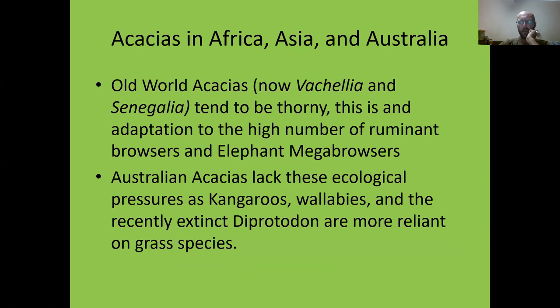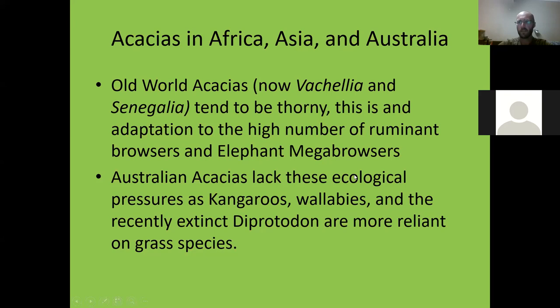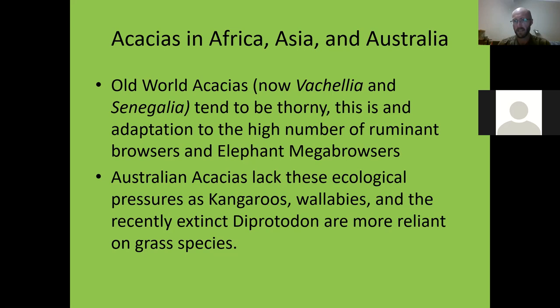An interesting ecological story: we all know what an acacia is — now called Vachellia and Senegalia. In Africa and Asia they tend to be thorny, an adaptation to the high number of ruminant browsers and mega-browsers like elephants. Australia doesn't have a high number of browsers, so there's been no ecological pressure on acacias there to grow thorns. In fact, thorns are a hindrance — you're wasting photosynthesis and growth energy on defense mechanisms for no reason. So natural selection has favored thornless acacias in Australia, and any that do have thorns get out-competed because the thornless ones simply grow faster.